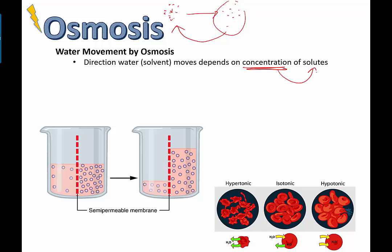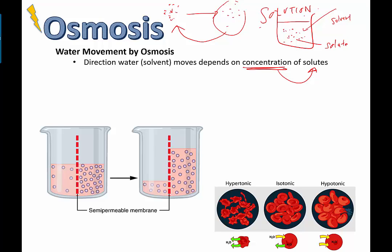Water moves from an area of low concentration to an area of high concentration - and the answer is yes, if you know exactly what you're talking about in terms of concentration, meaning solutes. In any given beaker, there's a liquid inside called the solvent. The stuff that we dissolve inside - salt, sugar, whatever - is called the solute. The entire thing is called a solution. A solution consists of a solvent with some solute dissolved in it.